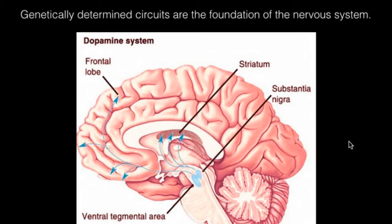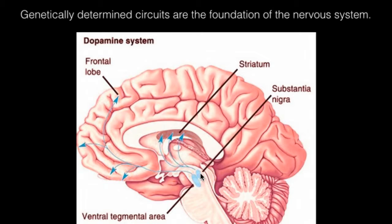Concept number three states that genetically determined circuits are the foundation of the nervous system. It is important to know that neural connections are established during development. Here we have an example of the dopaminergic system. We have two regions of the brain responsible for innervating the rest of the brain, with a lot of dopamine-producing neurons. One is known as the substantia nigra, and the other is known as the VTA, or ventral tegmental area. This pathway is known as the mesocorticolimbic system because it innervates the prefrontal cortex and the limbic system. The other pathway is known as the nigrostriatal system because it is responsible for innervating the striatum.